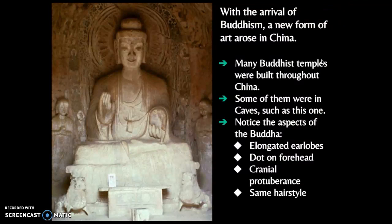With the Han dynasty we talked about how the Silk Road starts to connect Chinese civilization with the outside world, and through the Silk Road came Buddhism. With that came a new form of art. We've seen these statues before when we talked about Buddhism in India — Buddhist monks from India came into China and we start to see temples being built, some of them carved into caves like this one.